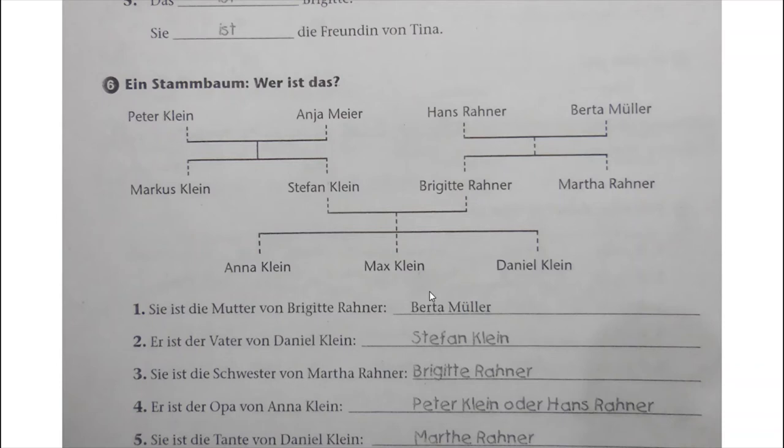Nummer 2: Er ist der Vater von Daniel Klein. Who is Daniel Klein? Vater Stefan Klein. Nummer 3: Sie ist die Schwester von Daniel Klein, von Martha Rana. Who is Martha Rana? Martha and then Schwester - Brigitte Rana.